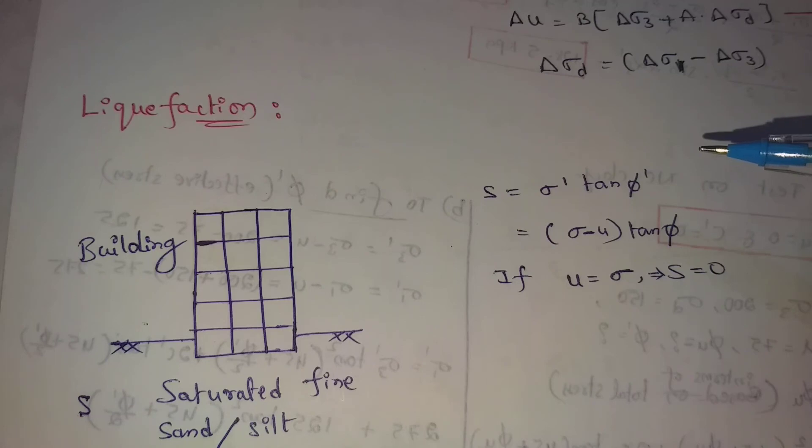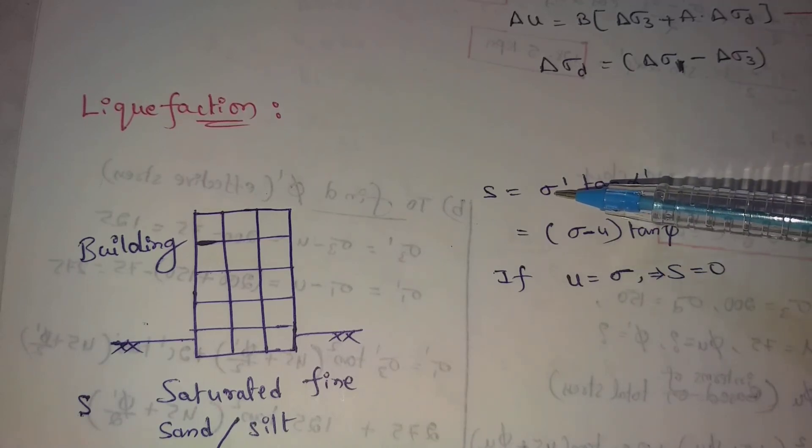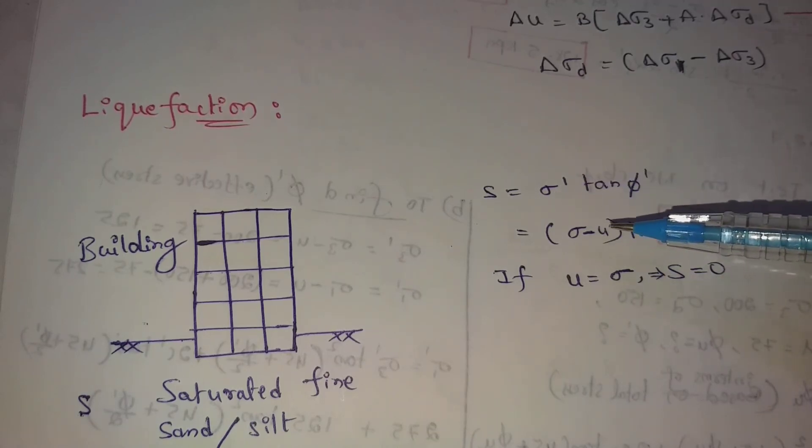Sigma dash equals sigma minus u. Effective stress equals total stress minus pore water pressure.